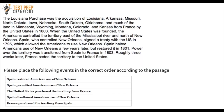Another common type of question on GED social studies is putting events in a passage in order. They'll give you a passage and a list of events from that passage, mixed up, and you'll need to put them in the correct order. Let's read this passage: 'The Louisiana Purchase was the acquisition of Louisiana, Arkansas, Missouri, North Dakota, Iowa, Nebraska, South Dakota, Oklahoma, and much of the land in Minnesota, Wyoming, Montana, Colorado, and Kansas from France by the United States in 1803.'